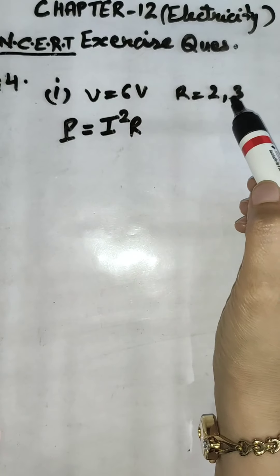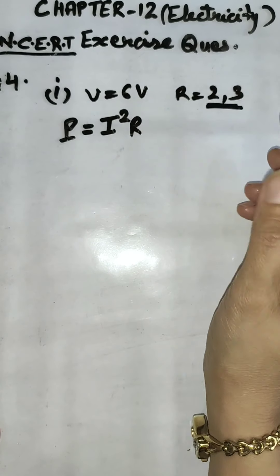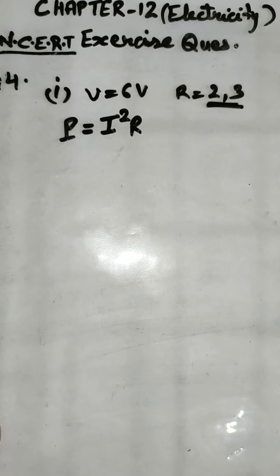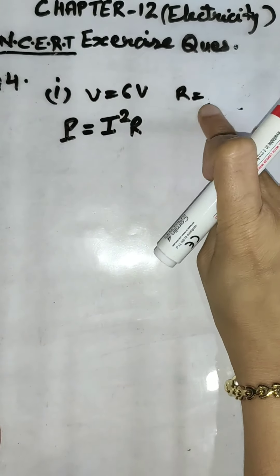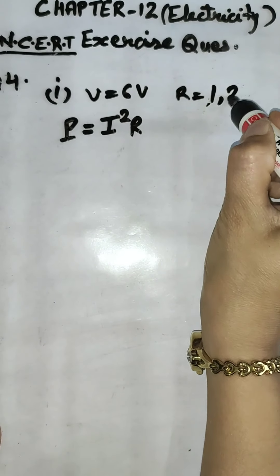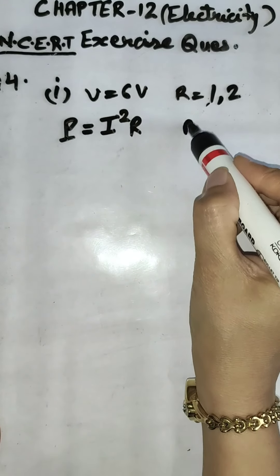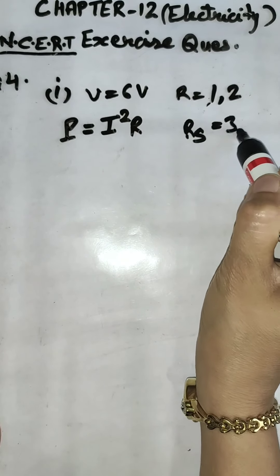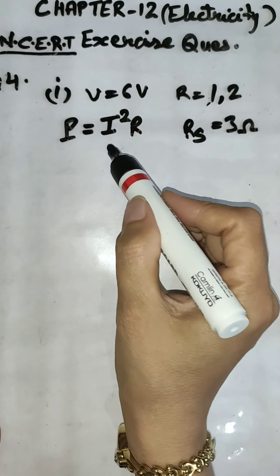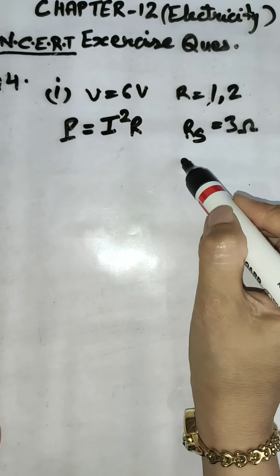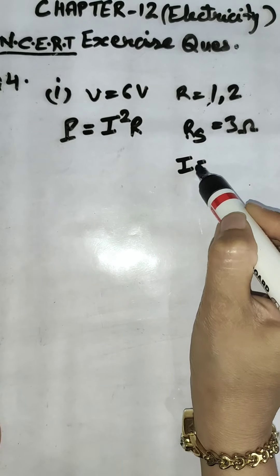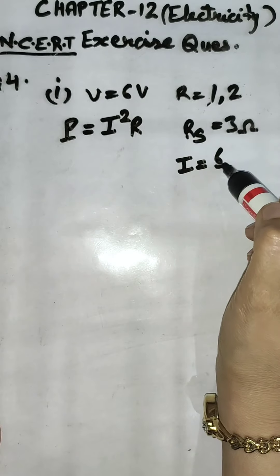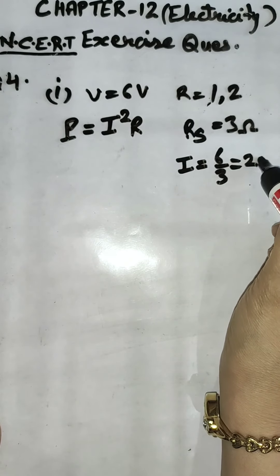First of all we will find total R in this circuit. It is given actually 1 and 2, resistance as 1 and 2. So Rs is equal to 1 plus 2 that is 3 ohm. And current through this, by using ohm's law, I is equal to V by R that is 6 by 3 that is 2 ampere.